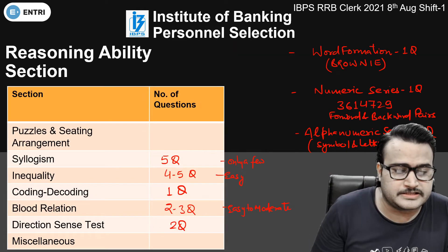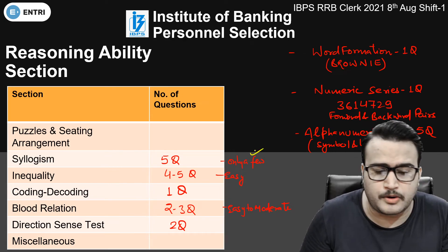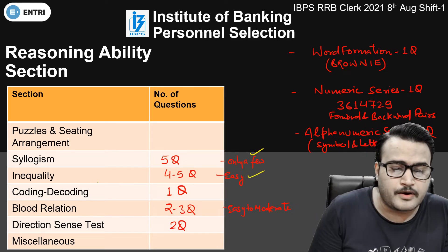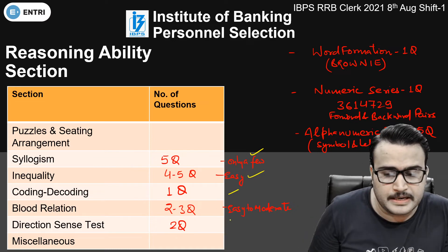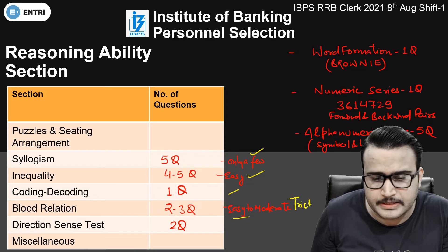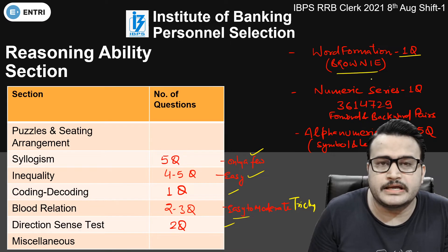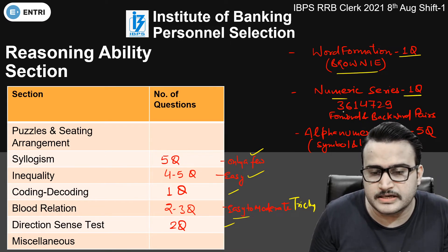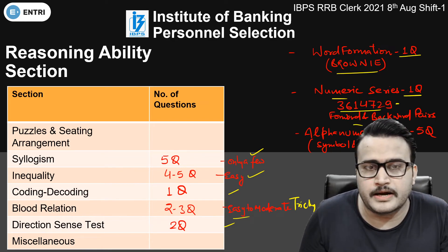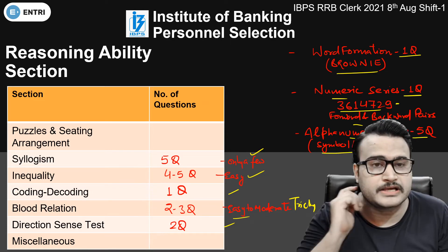Now let us talk about the Reasoning Ability section. Syllogism — only a few concepts, but the 5 questions were of very easy nature. 4 to 5 questions were of easy nature from inequality. Coding-decoding had 1 question, and blood relation had 2 to 3 questions of easy to moderate level — a bit tricky this time. 2 questions on directions and stress. There was a word formation question with a word like 'brownie'. Number series had 1 question with a number set like 3, 6, 1, 4, 7, 2, 9 — forward and backward pairs had to be found. Alphanumeric series had 5 questions with a mixture of symbols and letters.